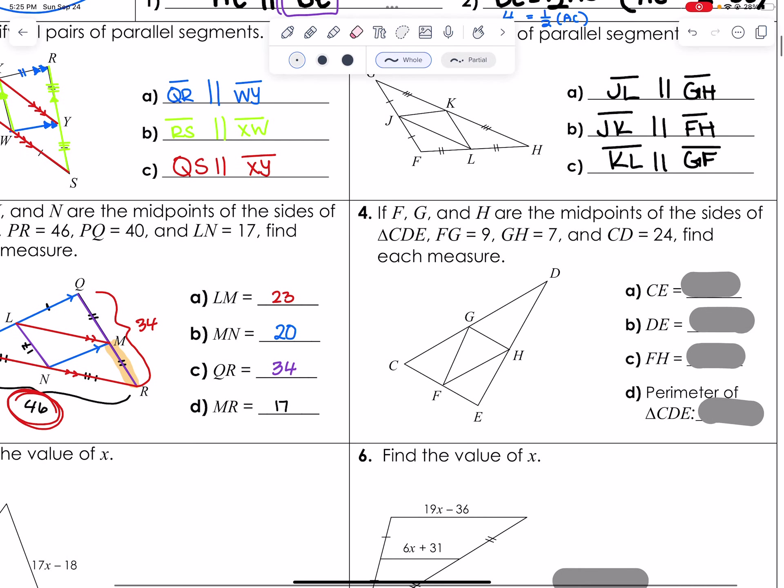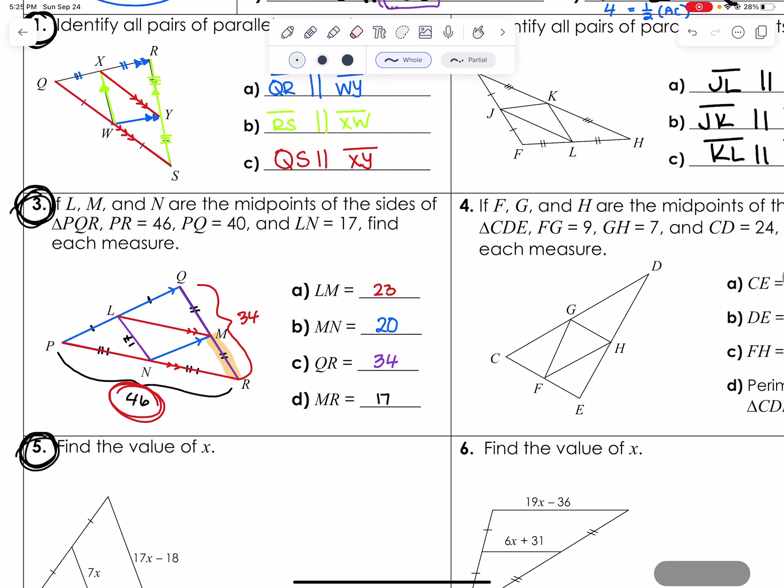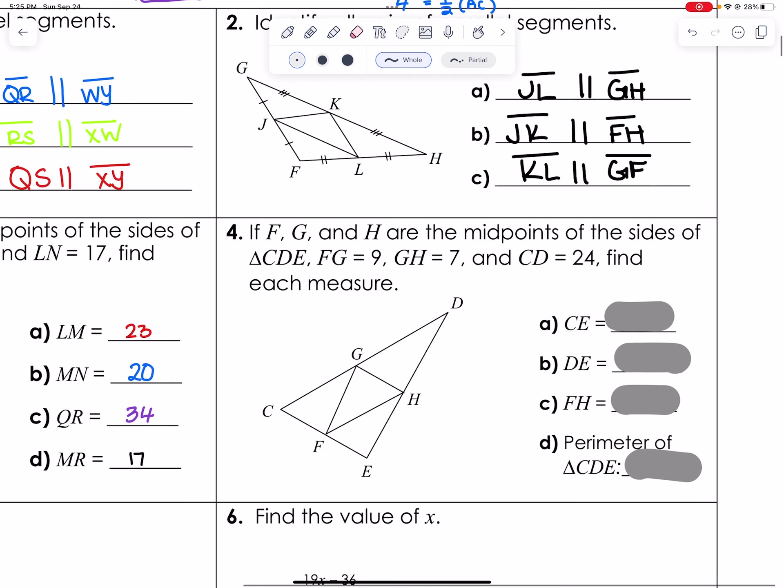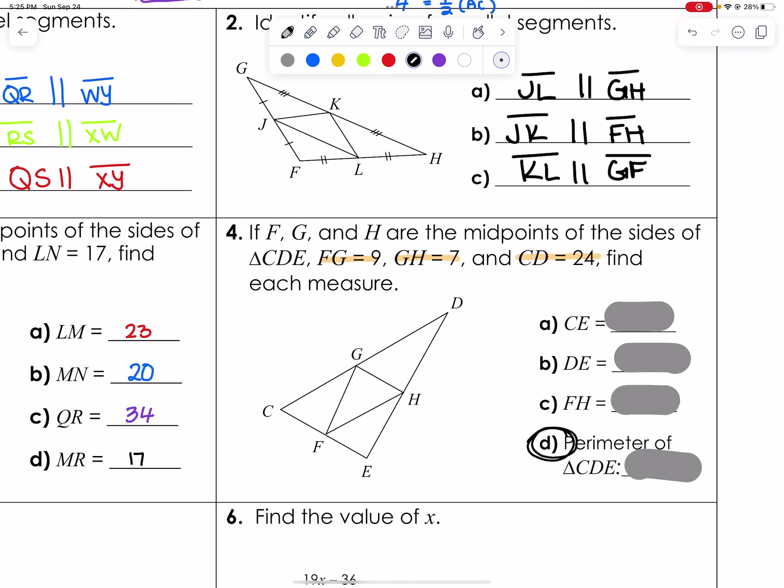So I'm going to give you a chance to go ahead and do 4, very similar to this. My first suggestion to you is to label all these sides that they've given you, find the relationships, find its parallel opposites, and then find the answer. The only thing new that they've thrown you is part D, which is perimeter. But remember, perimeter is just adding up all the sides, all the major sides of this triangle CDE. So go ahead and do that, pause me, and check in when you're done.